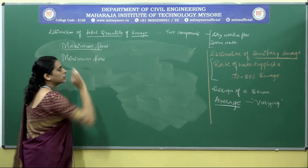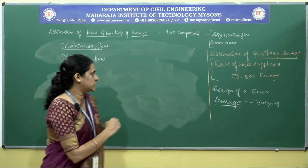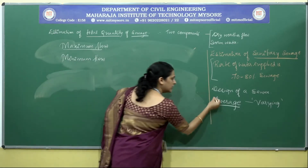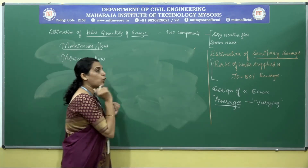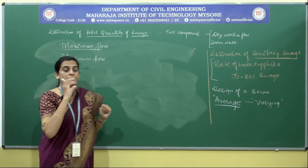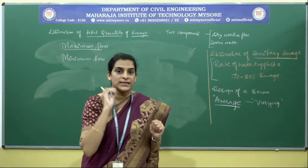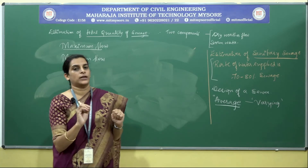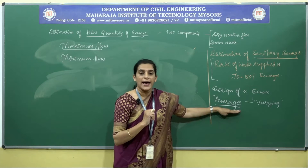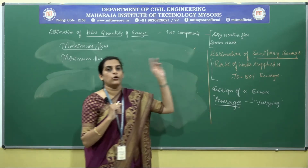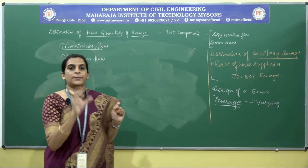When calculating the maximum flow, we take the average generation of sewage. The average flow must be multiplied with the present population at the beginning of the design period and also multiplied with the prospective future population at the end of the design period, in order to get a peak factor.